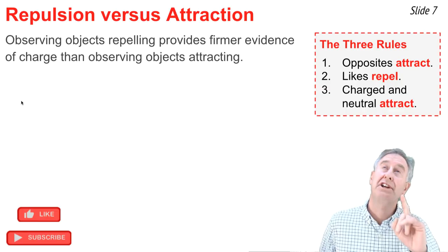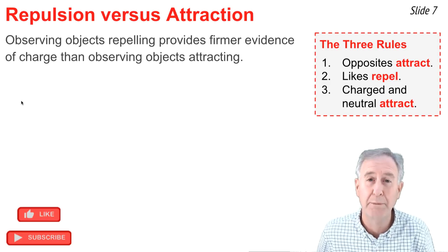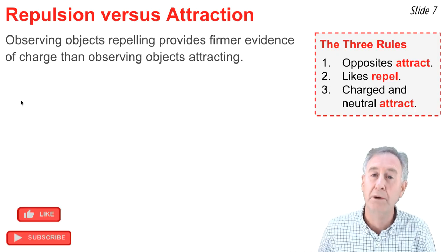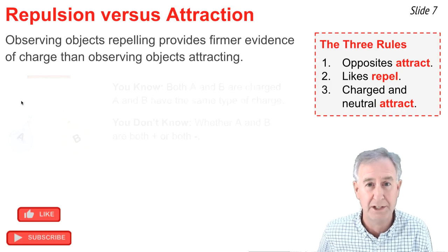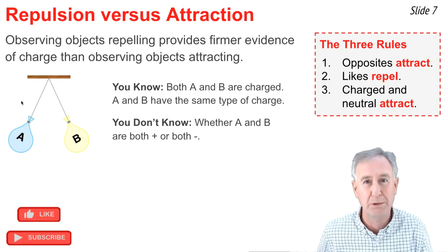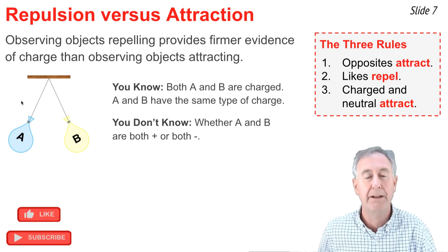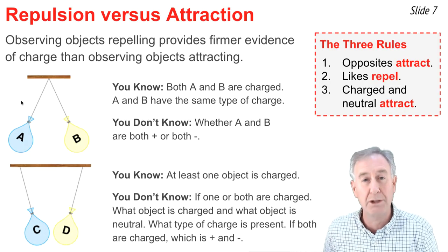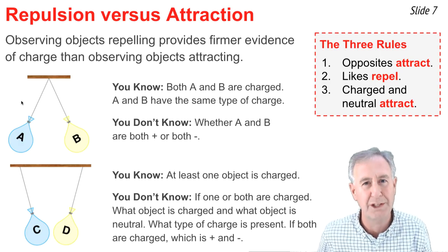When you inspect the rules of charge interactions, you'll notice that the word 'attract' shows up twice — in rule one and rule three — but the word 'repel' shows up only once. For this reason, when you observe repulsion between two objects, it gives you more extensive information about their charges. For instance, when you see balloons A and B repelling, you know both balloons are charged, and charged with the same type of charge — you just don't know if they're both positive or both negative. On the other hand, if you see balloons C and D attracting, all you really know is that at least one of those balloons is charged.